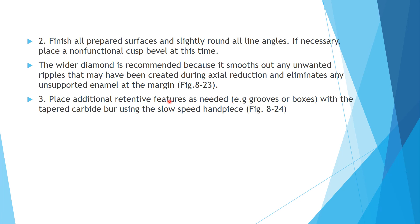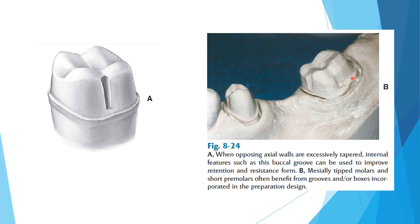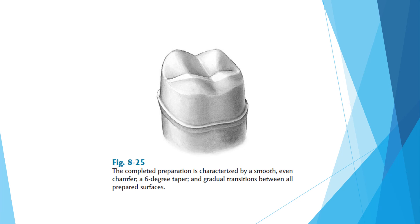Placement of any retentive features such as grooves or boxes can be done if needed, as shown in the photograph where grooves have been created on the prepared structure for additional retention. The completed preparation is characterized by a smooth, even chamfer, a 6-degree taper, and gradual transitions between all prepared surfaces. The functional cusp bevel at 45 degrees can also be appreciated.